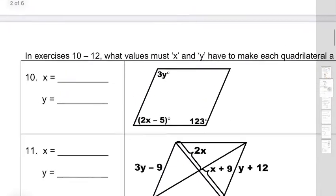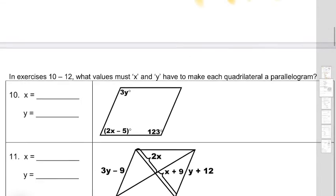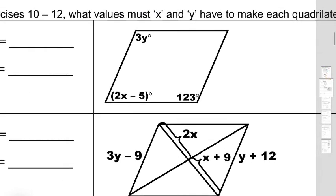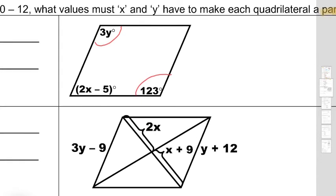Moving on — question number 10. Once again, read the directions. They're telling you what values of x and y have to be in order to make it a parallelogram. In other words, we're trying to make the properties of a parallelogram apply. We're only dealing with angles here, which means opposite angles would have to be congruent. So: 123 equals 3y. Simply divide both sides by 3 and I get y to be 41.